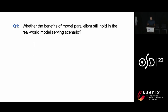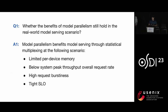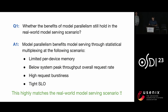To summarize, we can answer the first question: model parallelism can greatly benefit model serving when we have limited per-device memory, below-system peak throughput overall request rate, high request burstiness, and tight SLO. Surprisingly, we find these properties greatly match the real-world model-serving scenario, confirming our confidence to apply model parallelism to more complicated real-world cases.